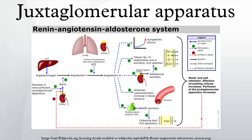Water flows into the cell along the osmotic gradient, causing the cell to swell. When the cell swells, a stretch-activated non-selective anion channel is opened on the basolateral surface. ATP escapes through this channel and is subsequently converted to adenosine.